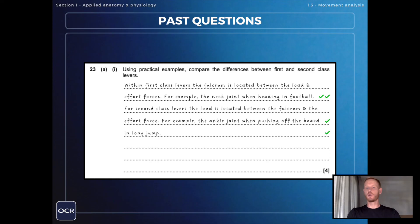With second-class levers the load is located between the fulcrum and the effort force. For example the ankle joint when pushing off the board in long jump.